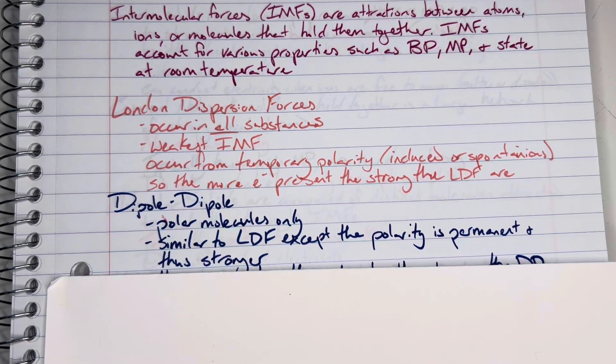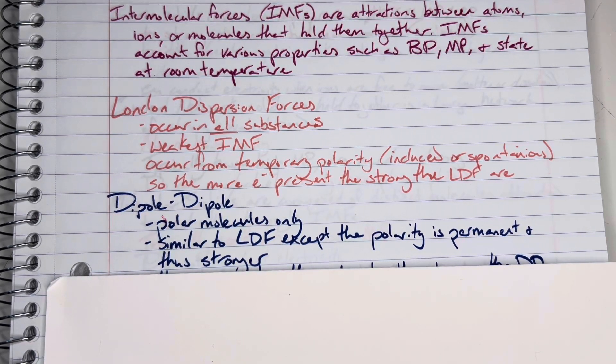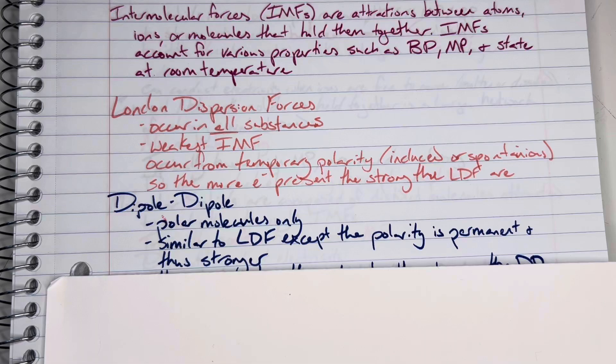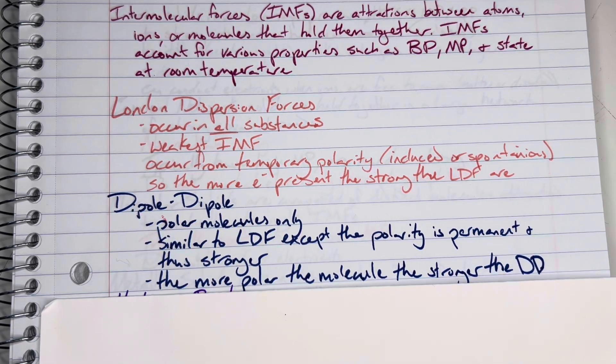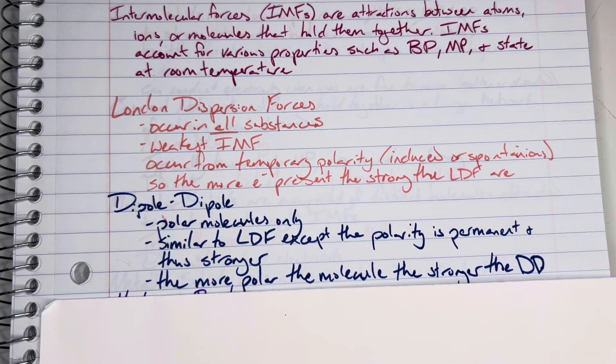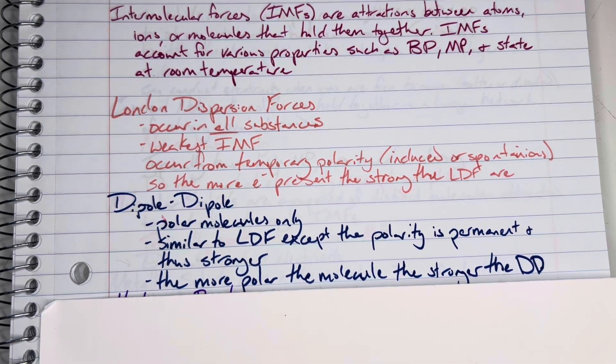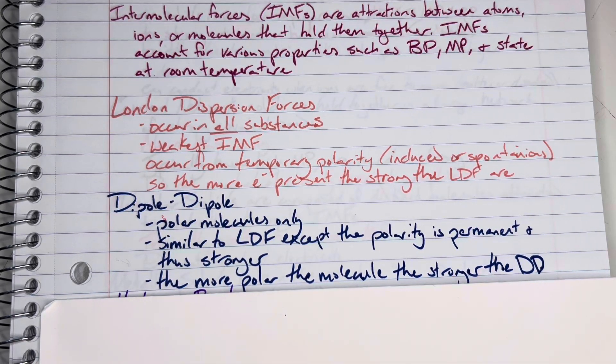So it is the permanent location of those electrons being more on one side rather than another, and so they are stronger since they are permanent and have a greater concentration. The more polar the molecule, the stronger the dipole-dipole forces are.